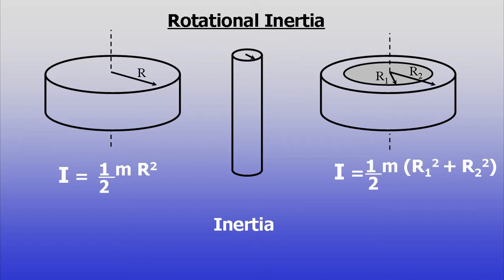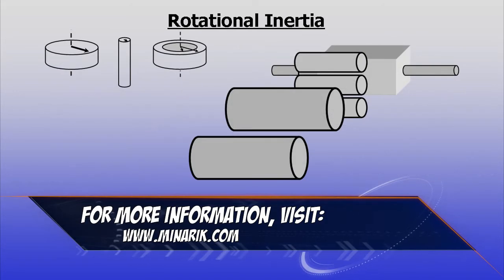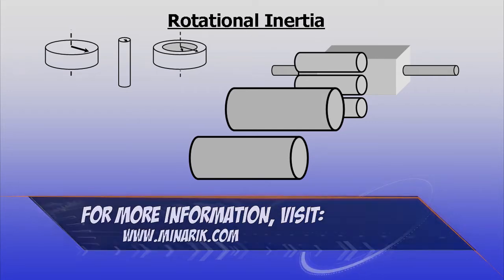Inertia equations are readily available for standard shapes, such as discs and cylinders. Machine parts such as shafts, pulleys, and pinch rollers can be approximated this way.